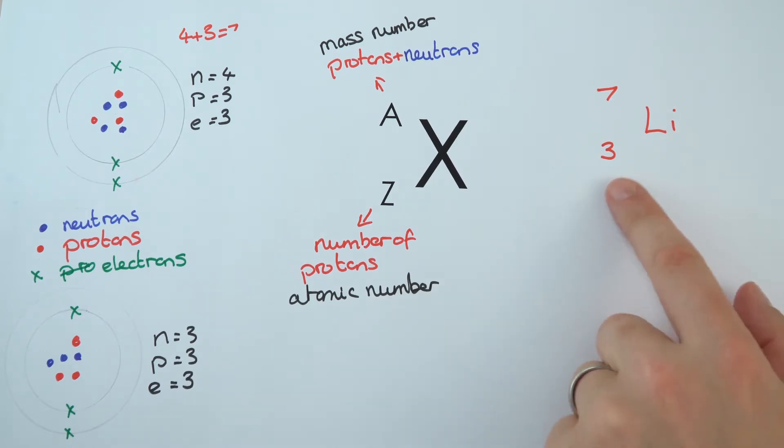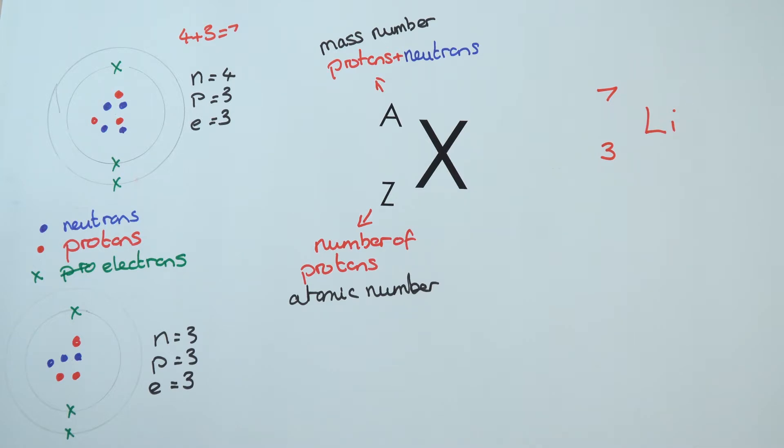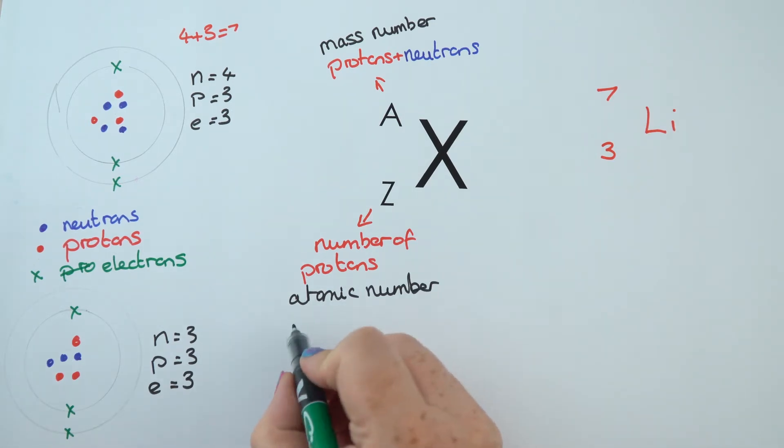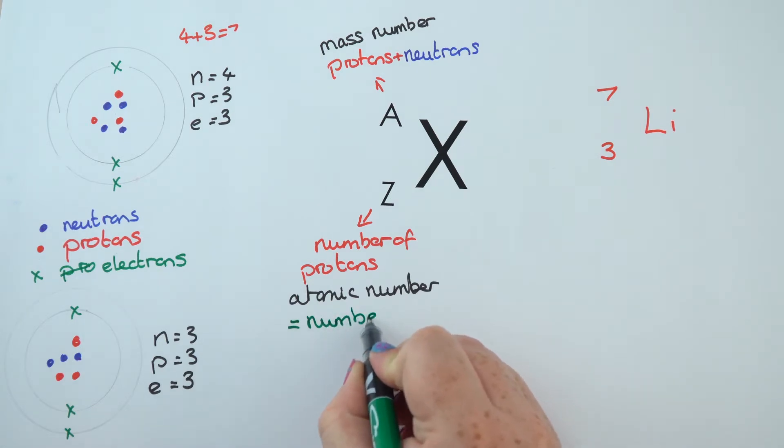So this one here is the first atom and it says that you've got three electrons as well. This number down here in an atom, the atomic number, the number of protons, will also equal the number of electrons. And that's because the negative electrons balance out the positive protons and it's got no overall charge.